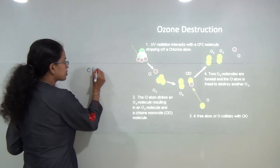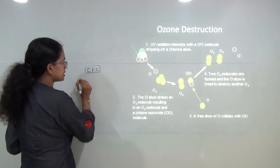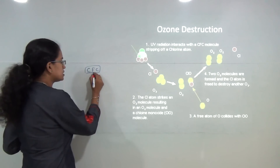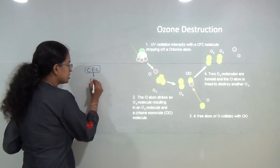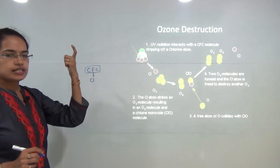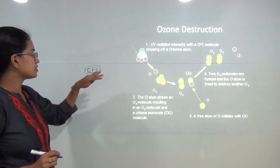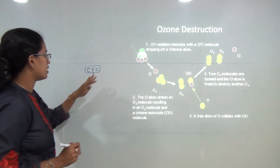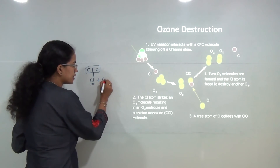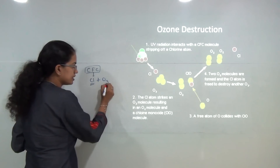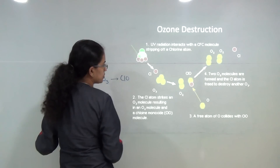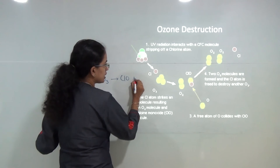When ultraviolet rays react with chlorofluorocarbons, they release a free chlorine radical. This free chlorine radical reacts with ozone to form chlorine monoxide and oxygen.